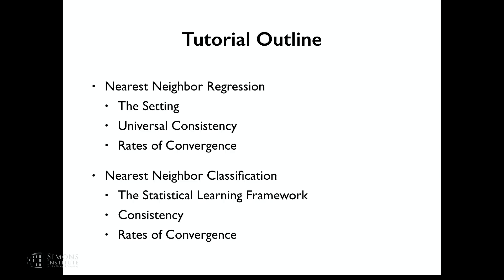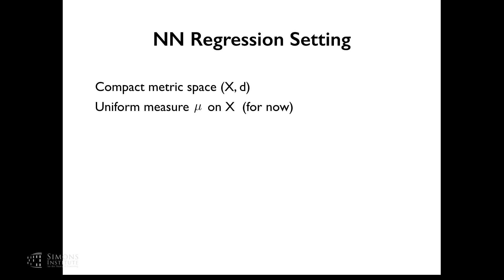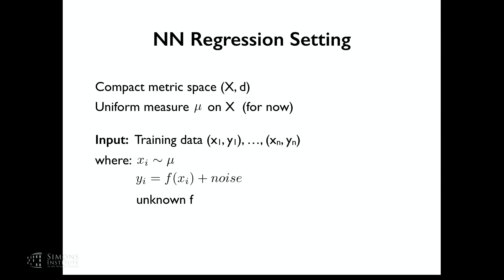For the regression setting, we have some compact metric space X with a distance function d, and a measure mu on X — for now imagine this is the uniform measure. Our input is training data x1, y1 to xn, yn, where the xi's are drawn from mu. Our yi's equal some unknown function f of xi plus noise, and we hope to predict y for an unknown x so that it's close to the actual y.